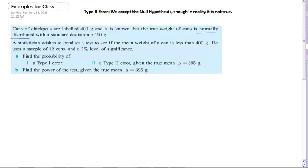A statistician wishes to conduct a test to see if the mean weight of a can is less than 400 grams. He uses a sample of 12 cans and a 2% level of significance.